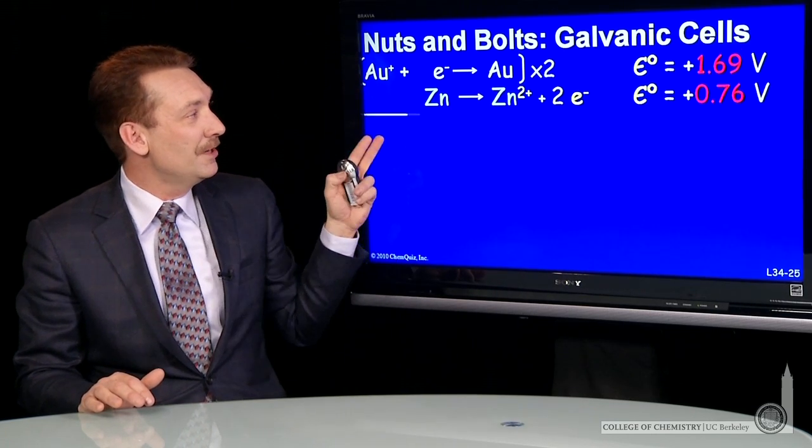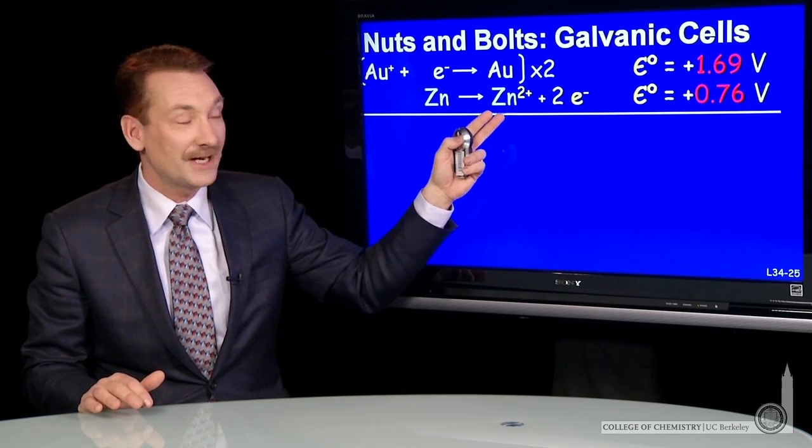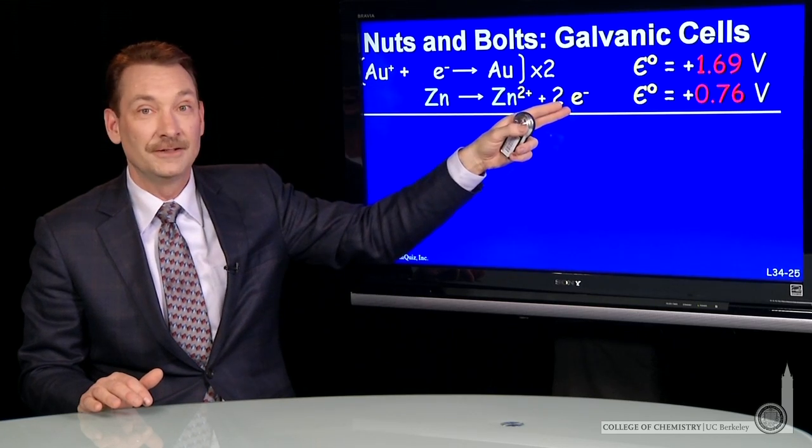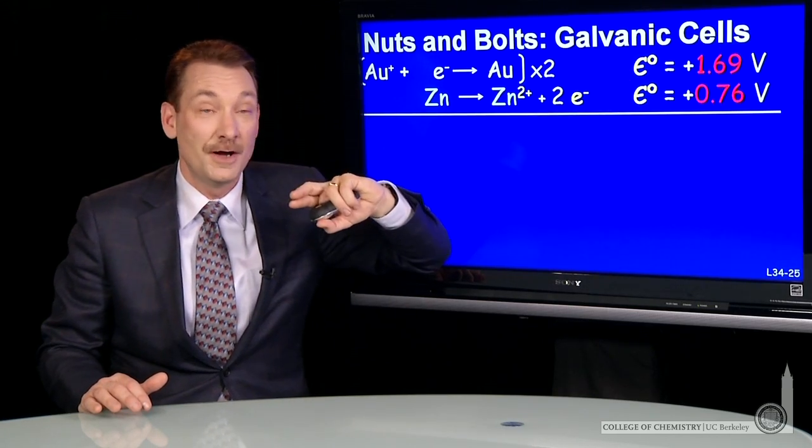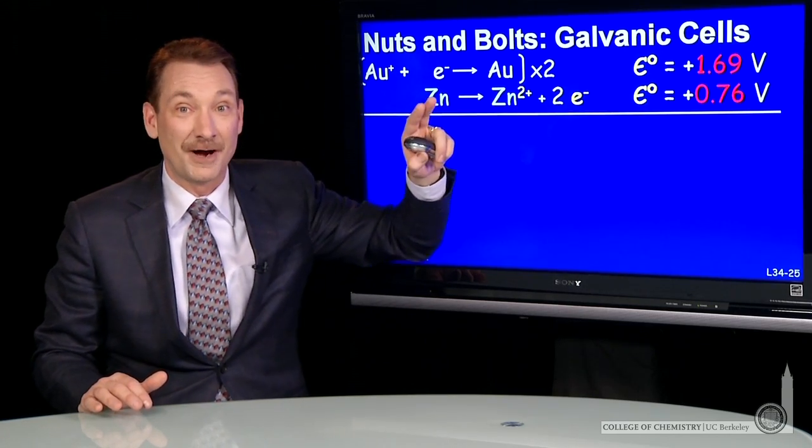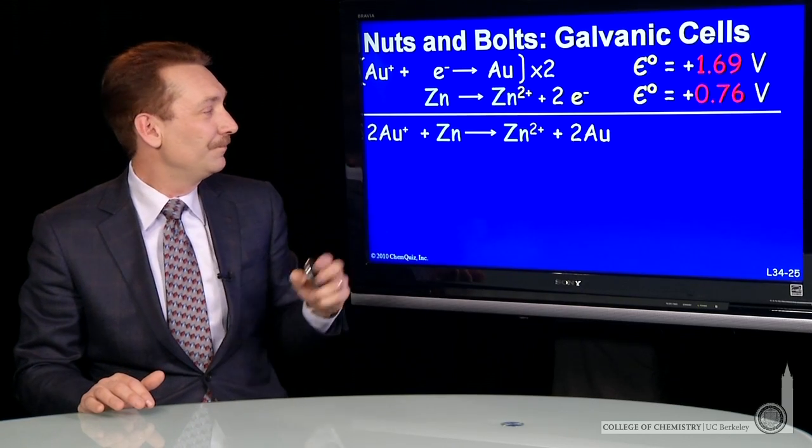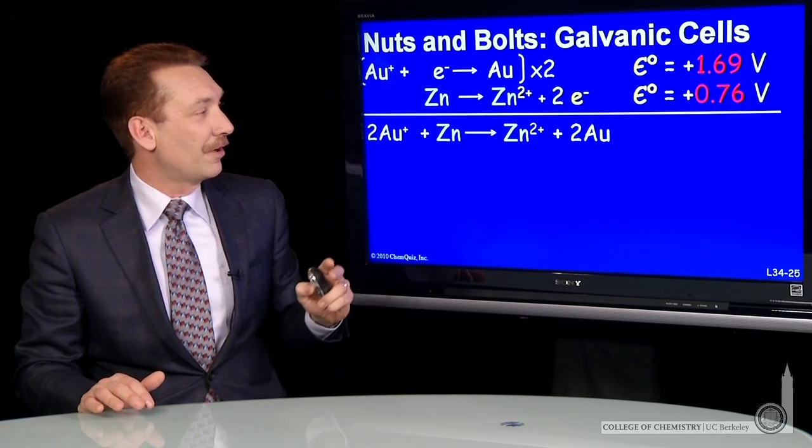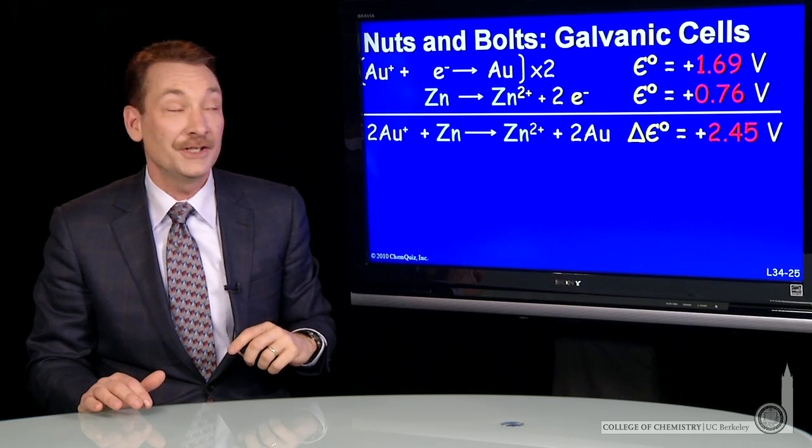Again, I'll have to multiply through by 2 to get the stoichiometry correct for electrons to cancel. But I don't multiply through by my intensive property of voltage. I get an overall stoichiometry for the chemical reaction and overall voltage.